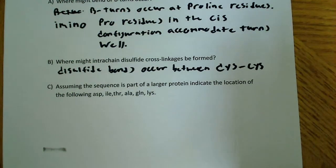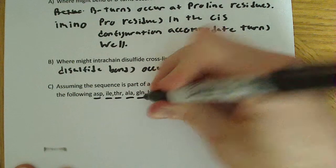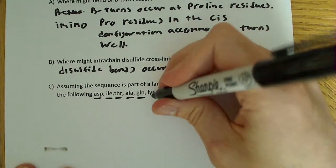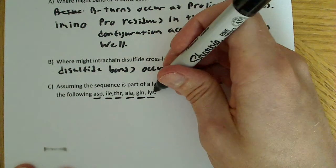It says, assuming the sequence is part of a larger protein, indicate the location of the following: aspartic acid, isoleucine, threonine, alanine, glutamine, and lysine.